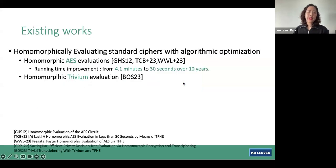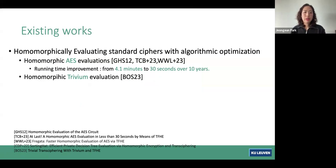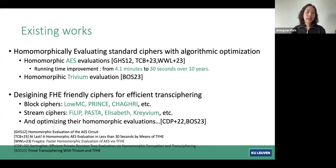There are existing works on homomorphically evaluating standard ciphers with algorithm optimization. For example, homomorphic AES evaluations have been studied for over 10 years and the running time has been improved from 4.1 minutes to 30 seconds. Recently, homomorphic Trivium evaluation was also optimized. Another approach is to design FHE-friendly ciphers for efficient transciphering, such as block ciphers LowMC and Prince Cherry, and stream ciphers Philip, Basta, Elisabeth, and Cravium, with further optimization of their homomorphic evaluation.